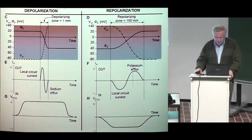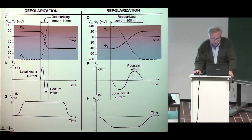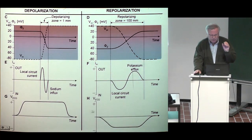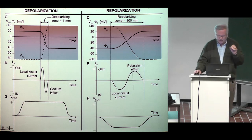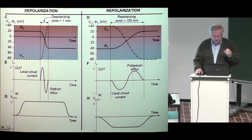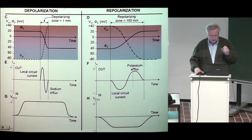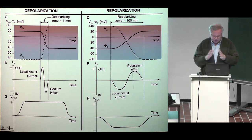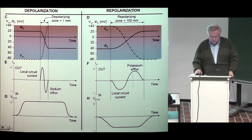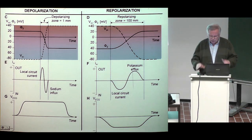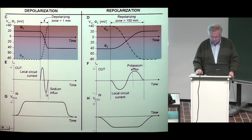The depolarization front is about one millimeter thick, because the repolarization process is so fast. But the repolarization, because it is proceeding so slowly, is about 100 millimeters thick.